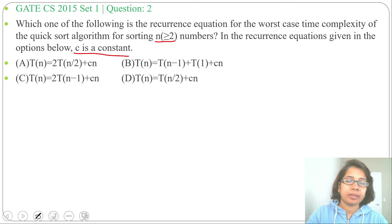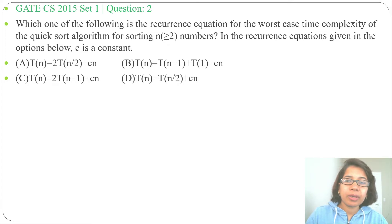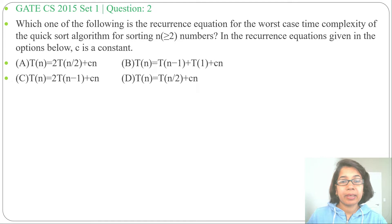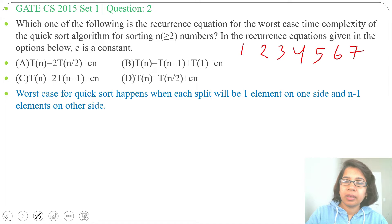I already discussed QuickSort previously — what is the best case and what is the worst case. If we are doing a balanced partition, that is the best case. If we are doing a partition where one side contains just one element and the other side contains n minus one elements, that is the worst case.